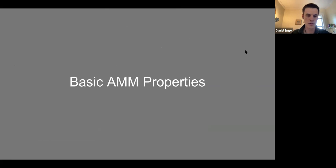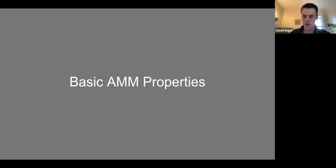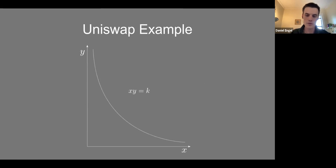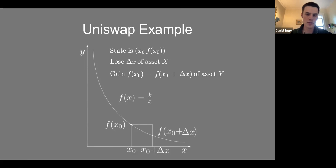I'm going to go over some properties that we take as a definition for what an automated market maker is. There are equivalent formulations like constant function market makers with differing terminology, but they're effectively the same. We use our definition because it's very useful when talking about composition, which is the most interesting thing we're discussing. Using Uniswap as a motivating example, the way a trader interacts with Uniswap: if the initial state is x₀, f(x₀), the trader deposits some amount delta x and withdraws an amount given by f(x).